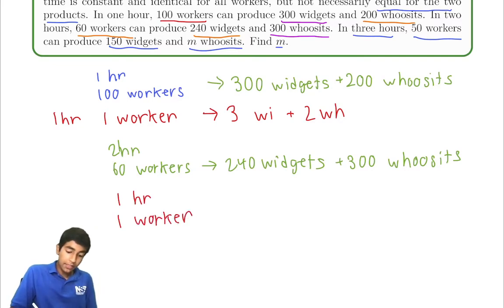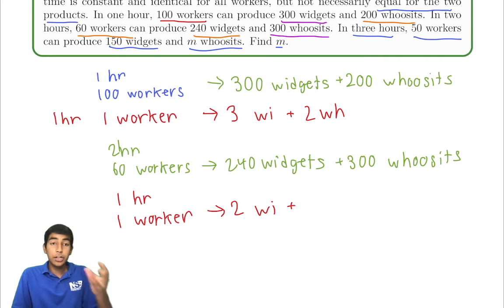So to get this, we divide by 120. Two widgets plus 300 by 120 is 30 by 12. 30 by 12—they both have a factor of 6—so it's just 5 halves. So 5 halves, we're just gonna call it 2.5 whoosits.